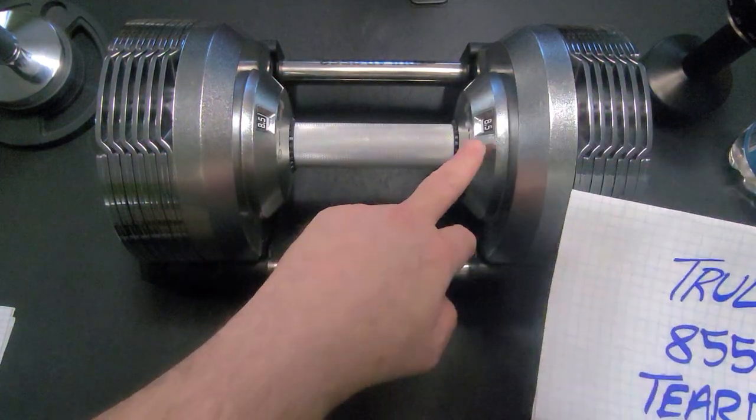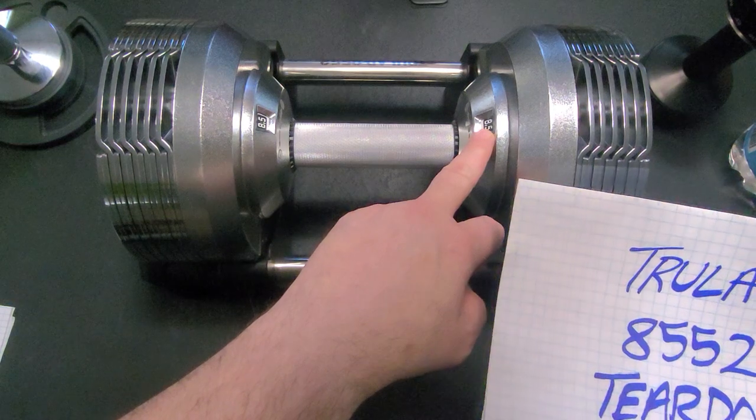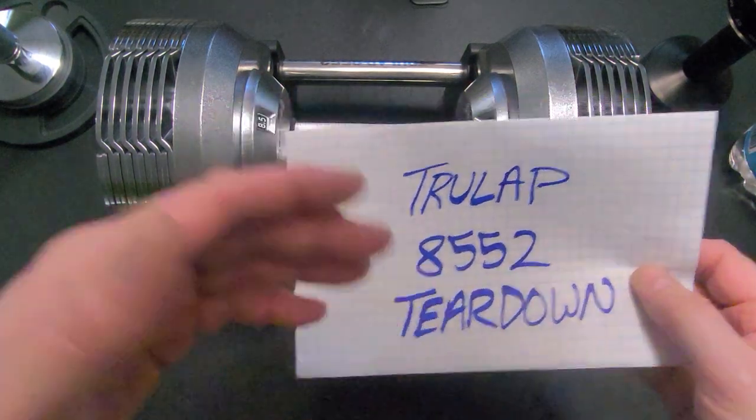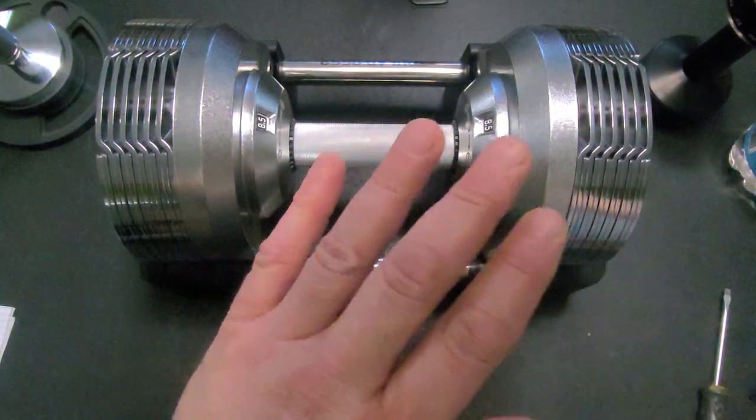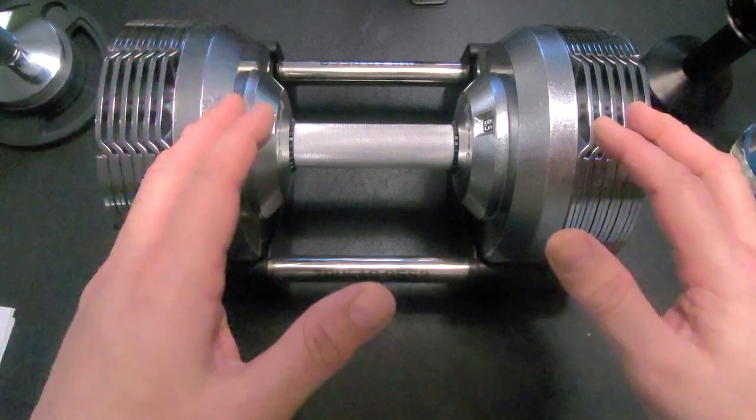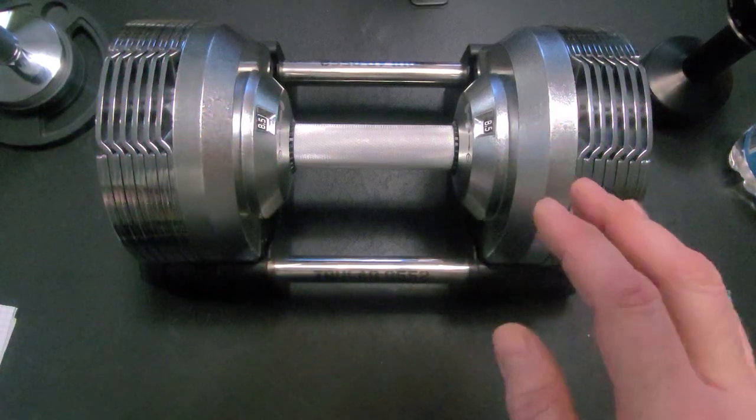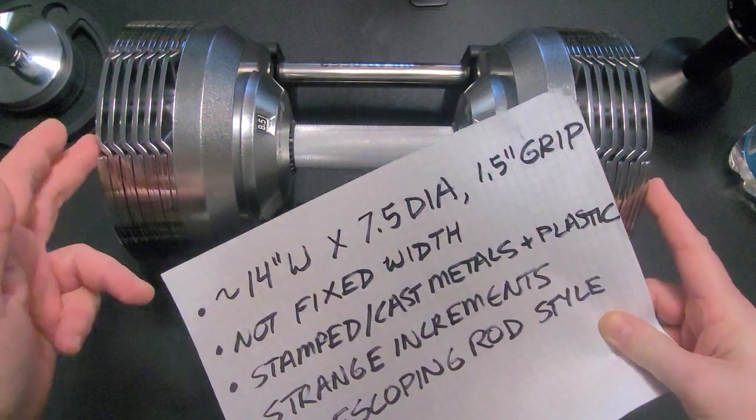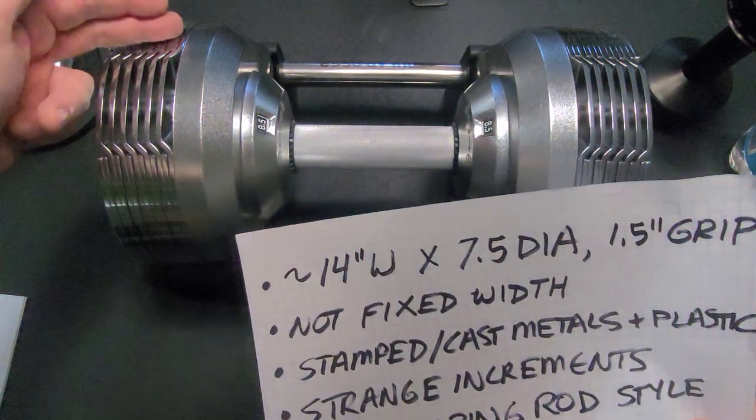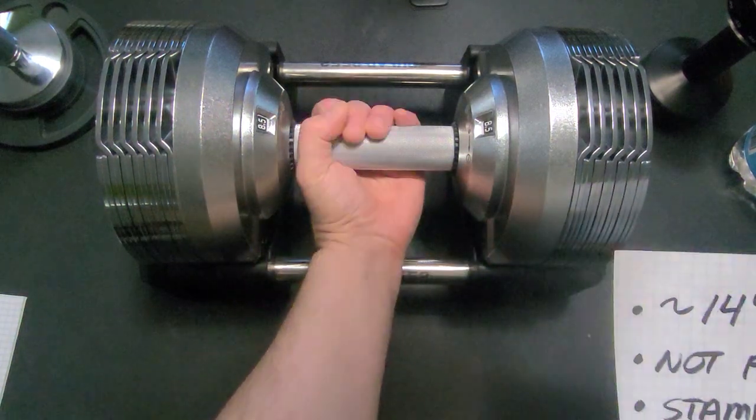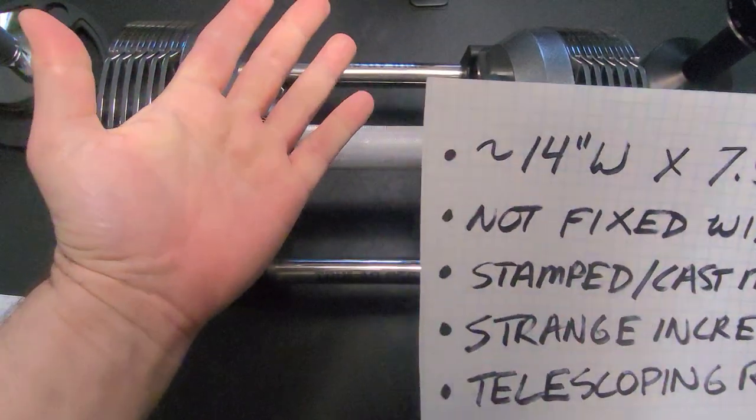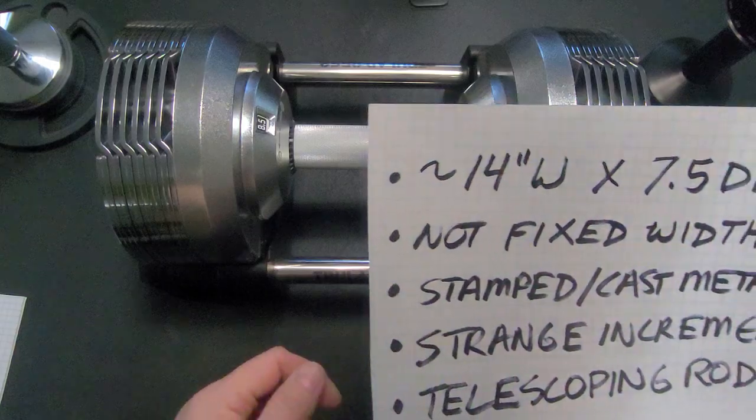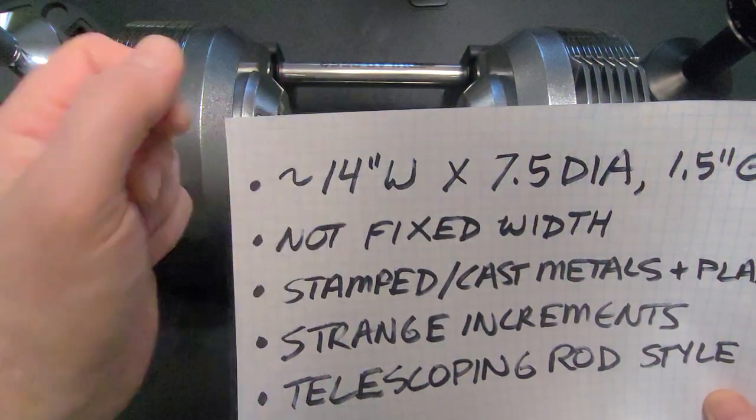The 8-5 stands for the 8.5 pound starting weight and the 5-2 stands for the maximum weight. Before I tear this down, we'll take a look at some of the details of this dumbbell. So it's a 14-inch wide dumbbell, 7-1/2 inches in diameter with a 1.5-inch grip. I wear a large glove size. That's about the fit for someone with a large-sized hand.